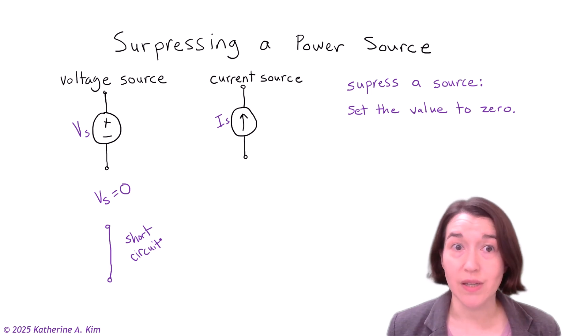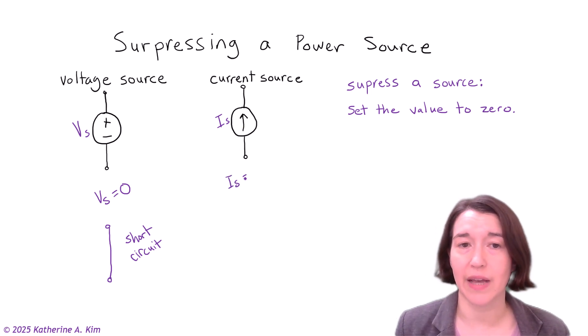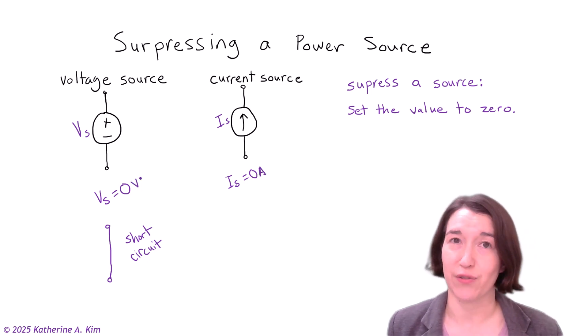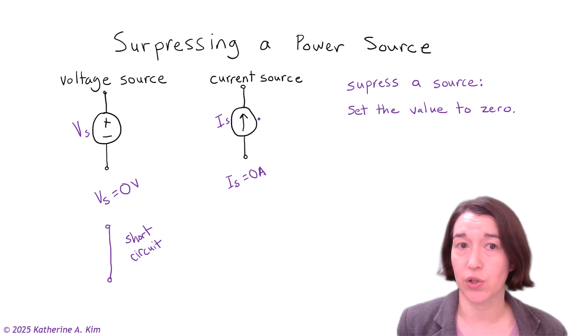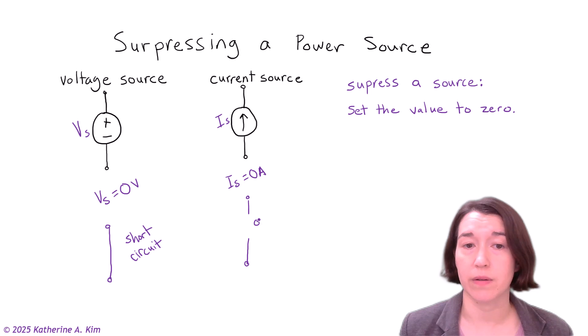And for the current source, we have its value is Is. And if we suppress that source, we are going to set the current value to zero. So Is is exactly zero, and this is amps, the previous one was volts, just for completeness. And if it's zero amps, it means that no current is flowing between the top and the bottom nodes. So that would be equivalent to an open circuit.